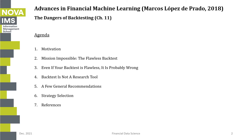Then we'll look at some general recommendations, particularly in dealing with backtest overfitting, and then talk about strategy selection — how, taking into account all the dangers and difficulties of backtesting, to finally select a winning strategy. And finally, I'll go through some references pointed out throughout this presentation.